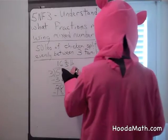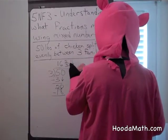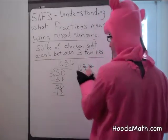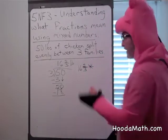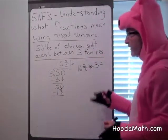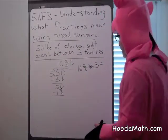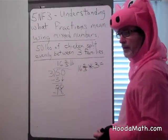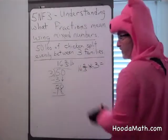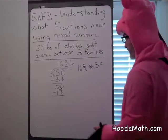So we're going to multiply sixteen and two-thirds times how many families? Three families. And we're hoping that that comes back to fifty pounds. Let's do it — let's split up our operation. First we'll multiply three times sixteen, and then three times two-thirds.